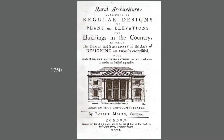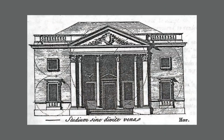This is documented in the title page illustration of Robert Morris's Rural Architecture, a 1750 English pattern book available in the American colonies. If we look closely at the facade, we see that the basis of its proportions is a series of circles.